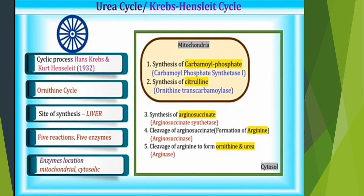The urea cycle is also called the Krebs-Henseleit cycle, because it is a cyclic process first discovered by Hans Krebs and Kurt Henseleit in 1932. It is also known as the ornithine cycle, as ornithine is one of the intermediates. The site of synthesis is the liver. The cycle mainly consists of five reactions, with five enzymes involved.